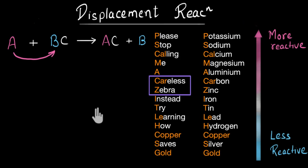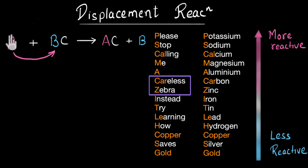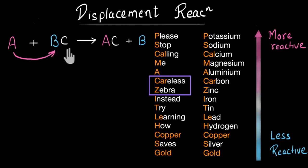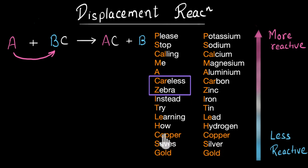Let's summarize. We talked about displacement reactions, in which a more reactive element displaces a less reactive one from its compound. We also saw the reactivity series and the careless zebra mnemonic to help remember it.